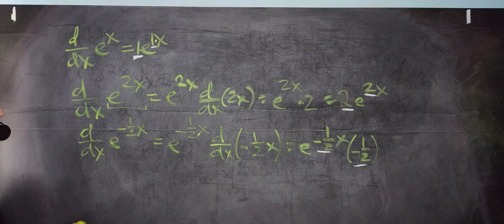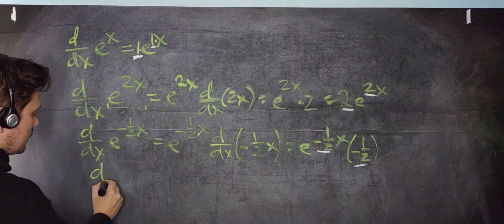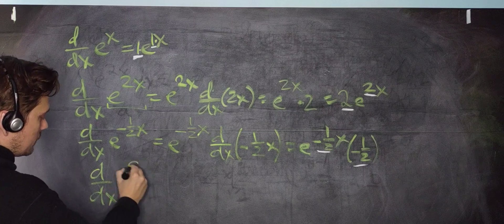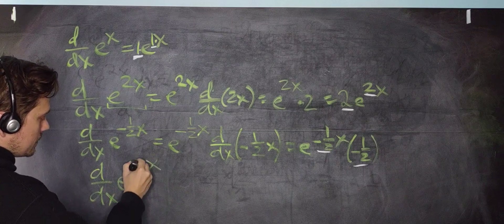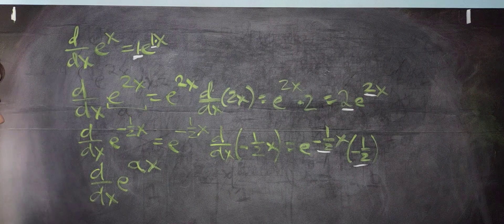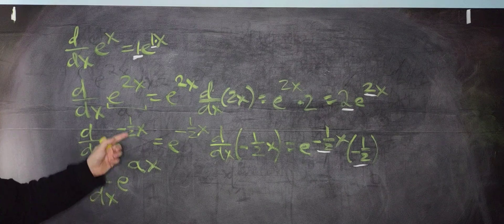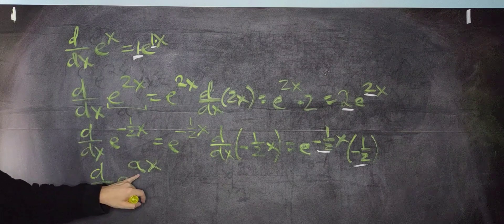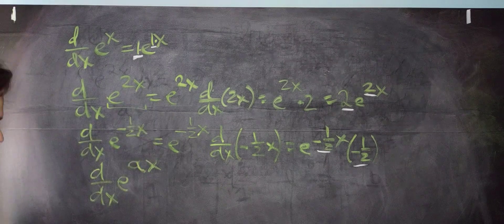So for that reason, take a look. When you have the derivative with respect to x of e to the ax, now a is just some number that it represents. For example, up here a is negative 1 half, here a is 2, here a is really 1. It's just some number, like what these numbers here.